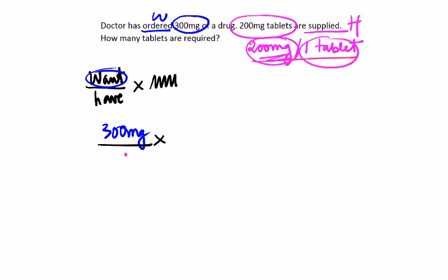We choose the first one because we want milligrams to match with the 300 milligrams, so 200 milligrams is what we have.